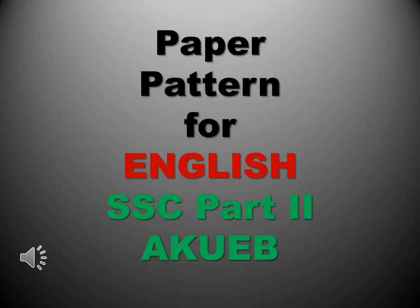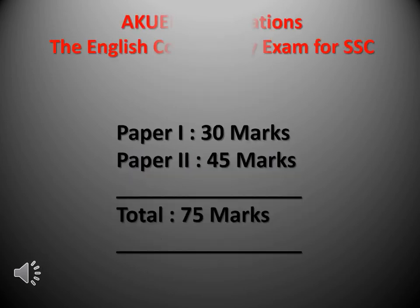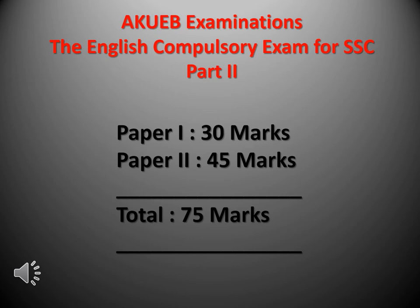Let's have an insight into the paper pattern for English SSC Part 2, i.e. metric AKUEB. The English compulsory exam for SSC Part 2 holds 75 marks. Paper 1 will be of 30 marks, while Paper 2 will be of 45 marks, altogether making 75 marks.